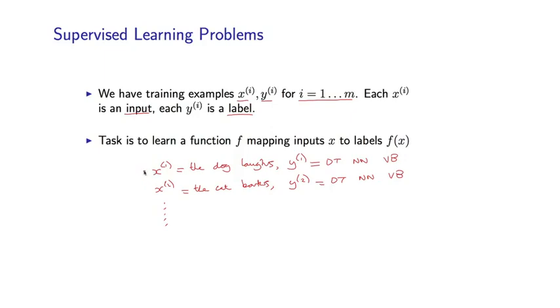So in the part of speech tagging case, each training example consists of a sentence as what's called the input and an entire tag sequence as the associated label. And we might have a few hundred or a few thousand or maybe even a few tens of thousands of examples like this. So given these training examples in supervised learning problems, the task is to learn a function f that maps inputs x to labels f(x).